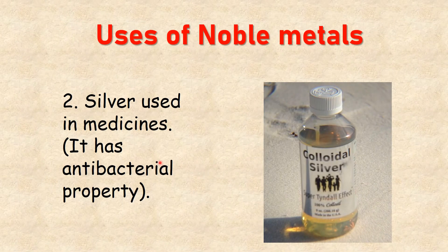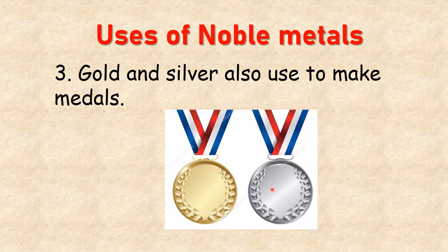Silver is used in medicines because it has antibacterial properties — it helps avoid infection. Gold and silver are also used to make medals, such as gold medals and silver medals.